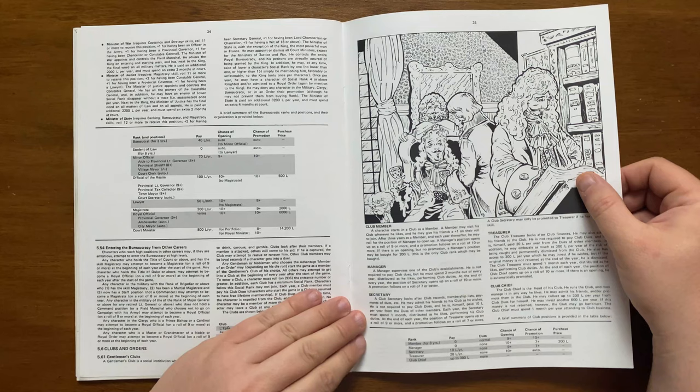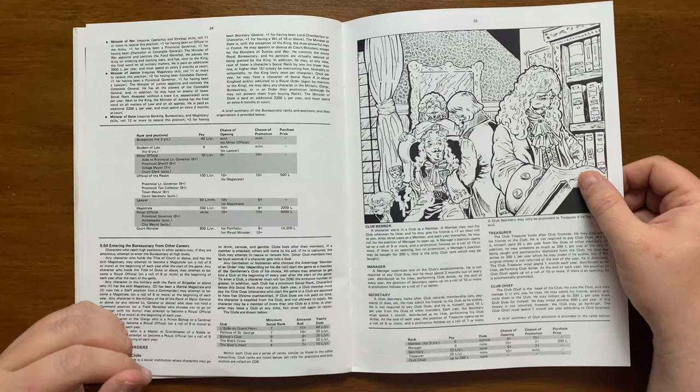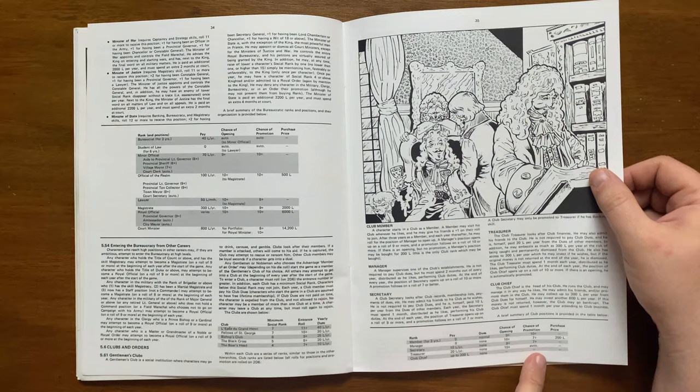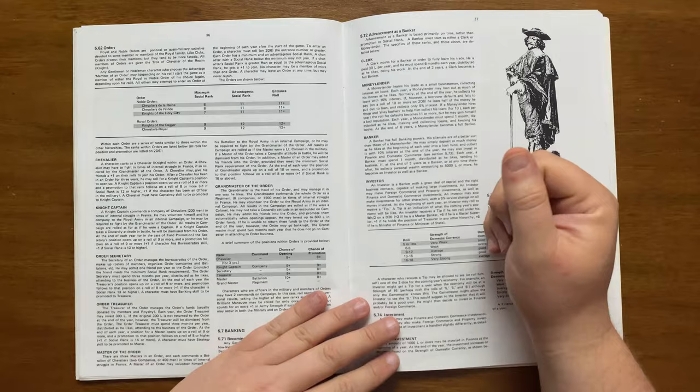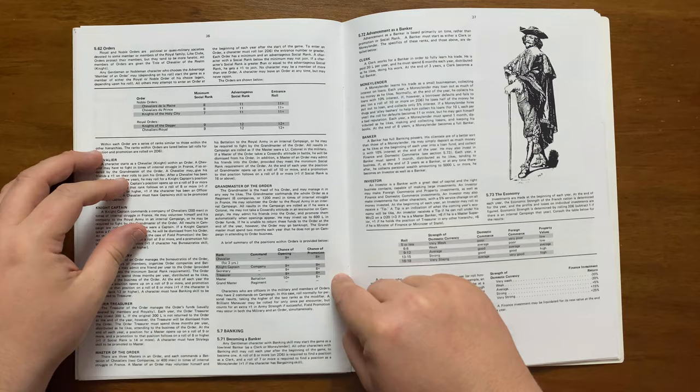After this we move onto clubs and orders, somewhere where characters can go to gamble, carouse and drink, giving some examples of prominent ones from the period such as the Black Cross and Epee de Grand Henri. It details all of the positions in the club including, as per the other tables, the pay scale and ranks. We then move onto the orders. It details the noble and royal orders of the period such as the Chevaliers du Prince and the Knight du Dagger and details all of the ranks one could expect to see there and possibly rise to from Chevalier to Grandmaster of the order, again summarised in this table here.